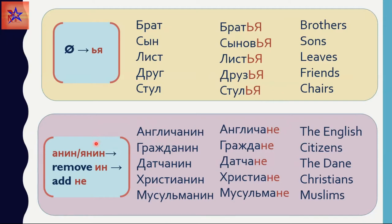The last group in the masculine gender is nouns which end in Анин or Янин. To make a plural form you just need to remove ИН and add НЕ. For example: Англичанин becomes Англичане, Гражданин would be Граждане, Датчанин would be Датчане, Христианин becomes Христиане in the plural, and Мусульманин becomes Мусульмане.